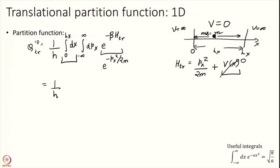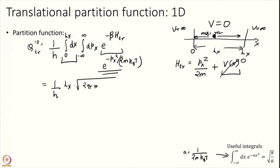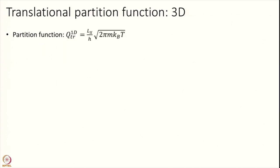This becomes e to the power of minus p_x² over 2m kT. The potential is 0 inside and infinite outside, which is why I integrate position only from 0 to Lx. Since there is no dependence on x at all, the position integral gives Lx. The momentum integral is a Gaussian integral. Using the standard formula with A equal to 1 over 2m k_B T, I get the square root of 2π m k_B T. So straightforwardly I get the translational partition function in 1D.